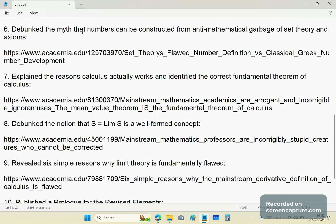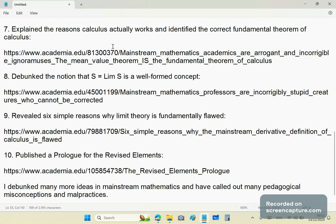Number six: I debunked the myth that numbers can be constructed from the anti-mathematical garbage of set theory and axioms. Here's another free article. Read it. Study it. Number seven: I explained the reasons calculus actually works. Neither Newton nor Leibniz knew why their calculus worked, why their methods worked. They had no clue. They didn't even provide proof for them. Neither did the morons of the last 400 years who came before me. And I have identified the correct fundamental theorem of calculus. The mean value theorem is the fundamental theorem of calculus.